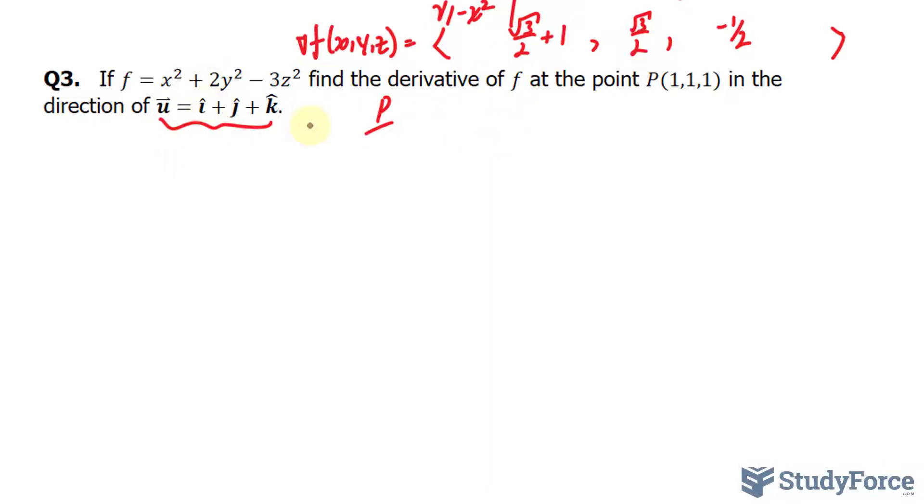That's done by taking each of these coefficients, 1, 1, and 1, squaring them, and square rooting the whole thing, which should give us the magnitude of our vector u.